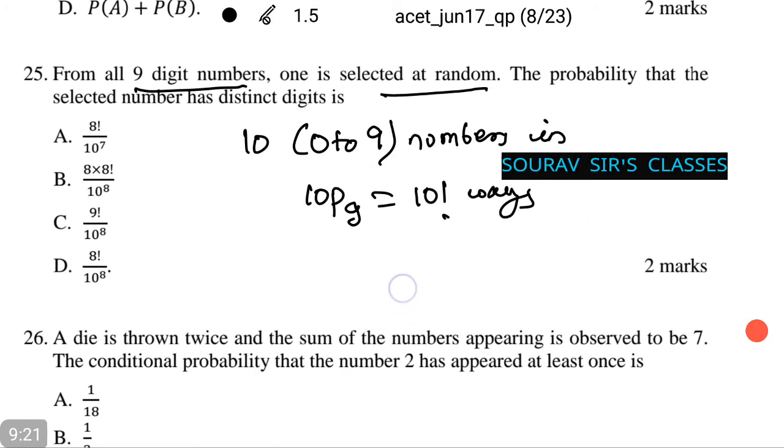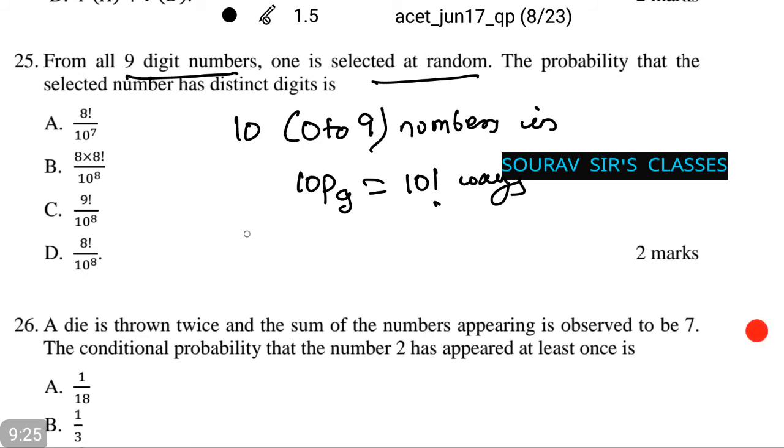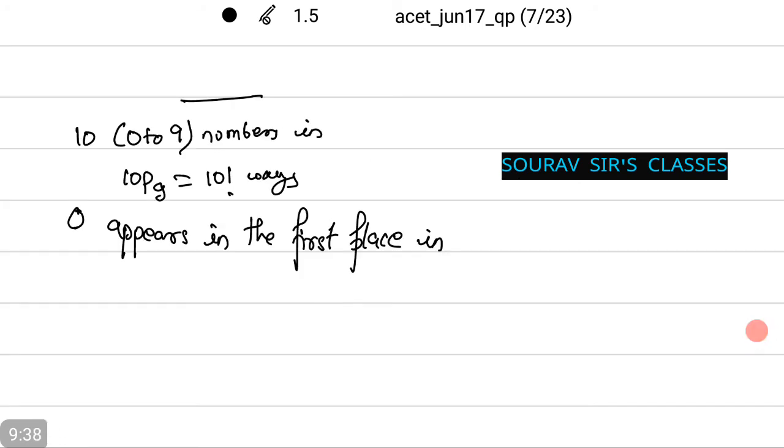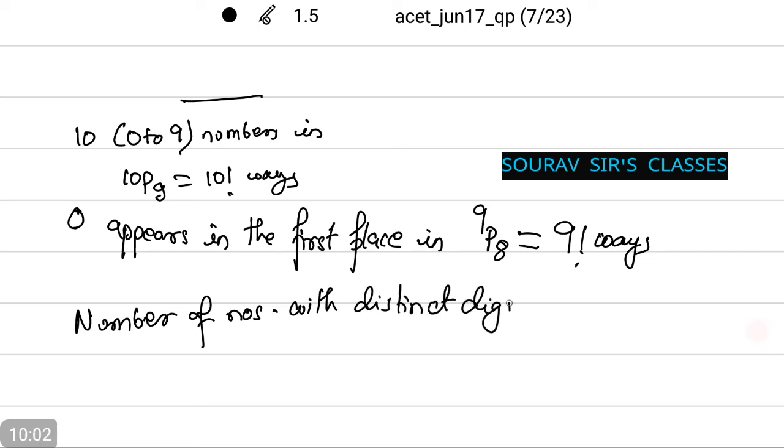Out of which zero will appear in the first place in 9 factorial ways. Okay, let me do it in a fresh page so that you see each and every calculation, each and every step that I am doing. This is the same as you need to understand these concepts very well. This is equal to 9 factorial ways. Thus, the number of numbers with distinct digits equals 10 factorial minus 9 factorial, which is equal to 9 into 9 factorial.